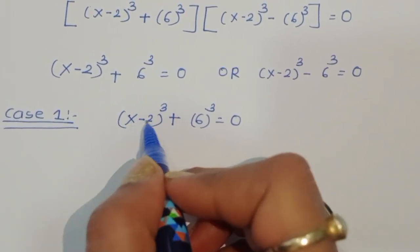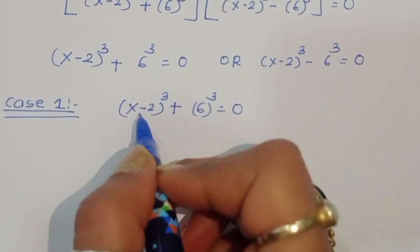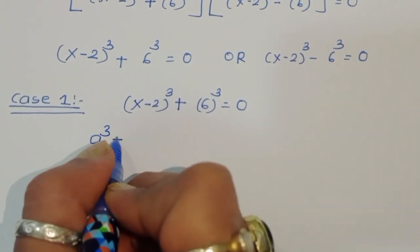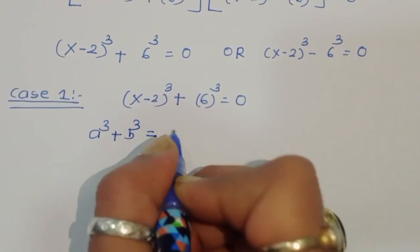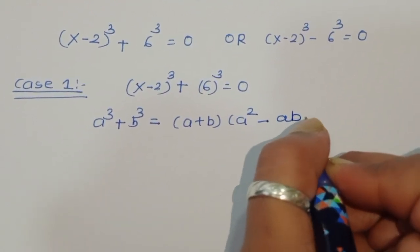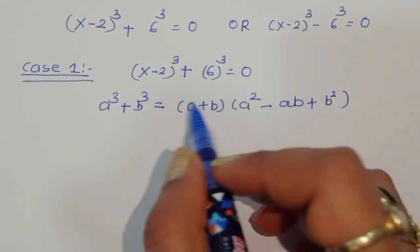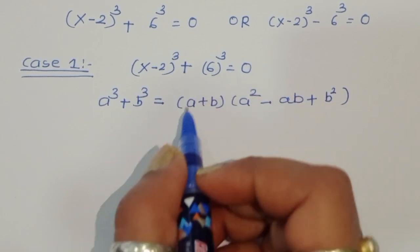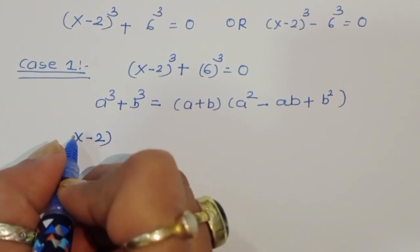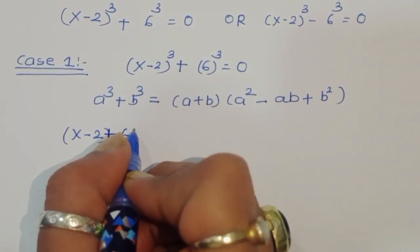In Case 1, this is the form of a³ plus b³, where a is (x minus 2) and b is 6. The formula is a³ plus b³ equals (a plus b)(a² minus ab plus b²). Applying this formula: (x minus 2 plus 6) times [(x minus 2)² minus 6(x minus 2) plus 6²] equals 0.